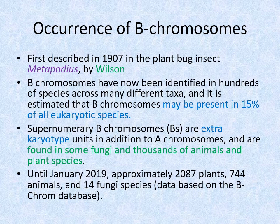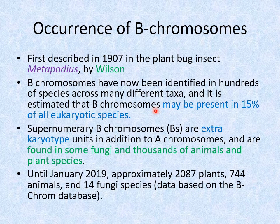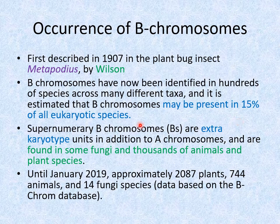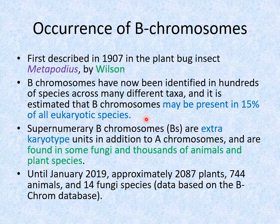B chromosomes were first described in a plant bug insect, Metapodius, by Wilson in 1907. By now, B chromosomes have been identified in many taxa, and it is supposed that they may be present in nearly 15 percent of all eukaryotic species, with this data increasing every day.